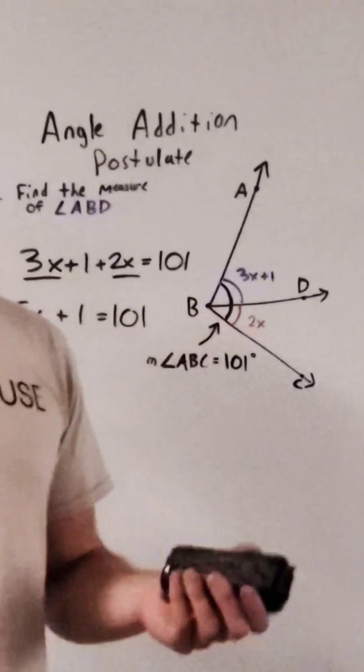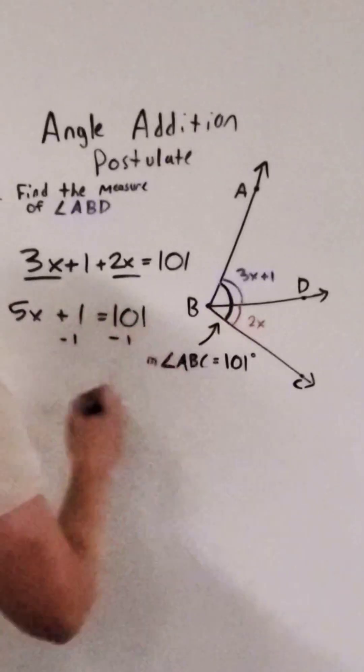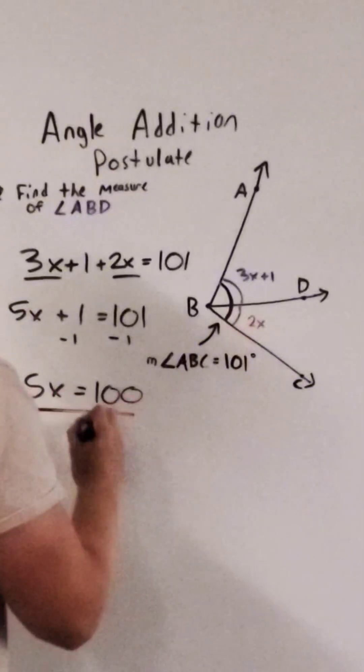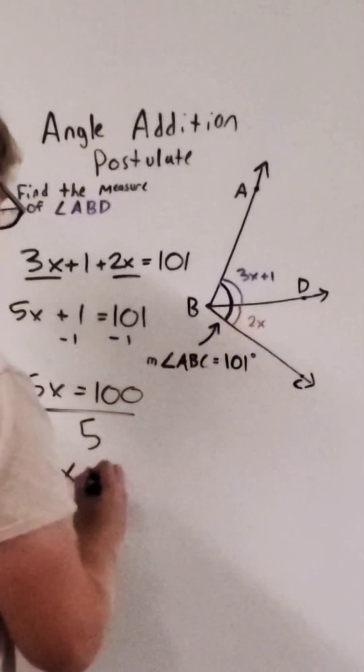Now we're going to do inverse operations and get rid of the 1 from both sides and we have 5x equals 100. Then we divide by 5 and get x equals 20.